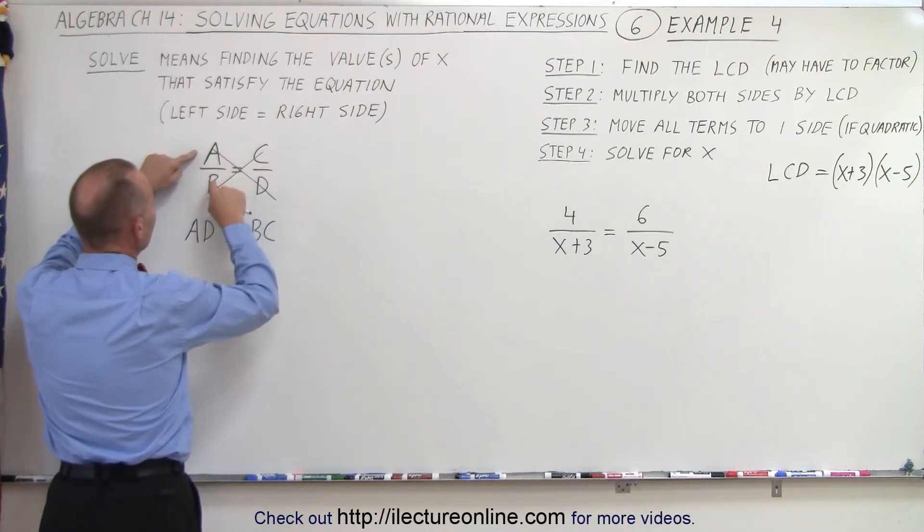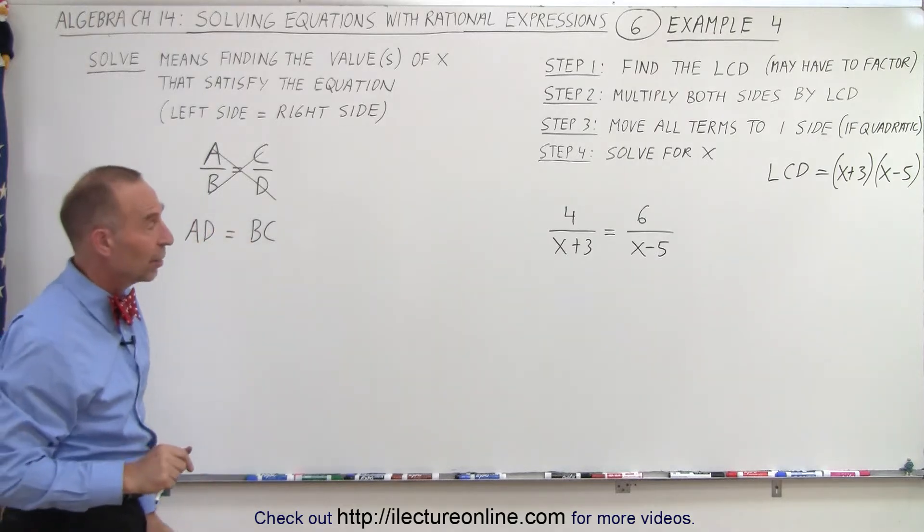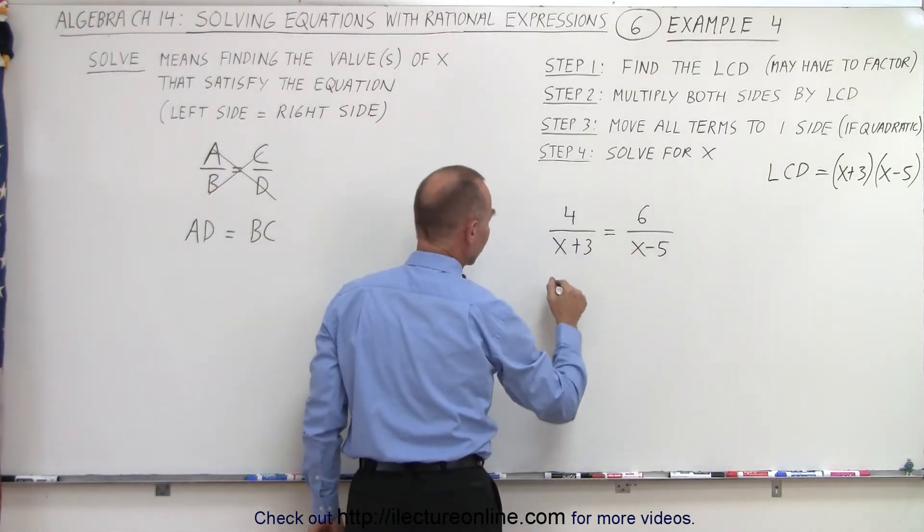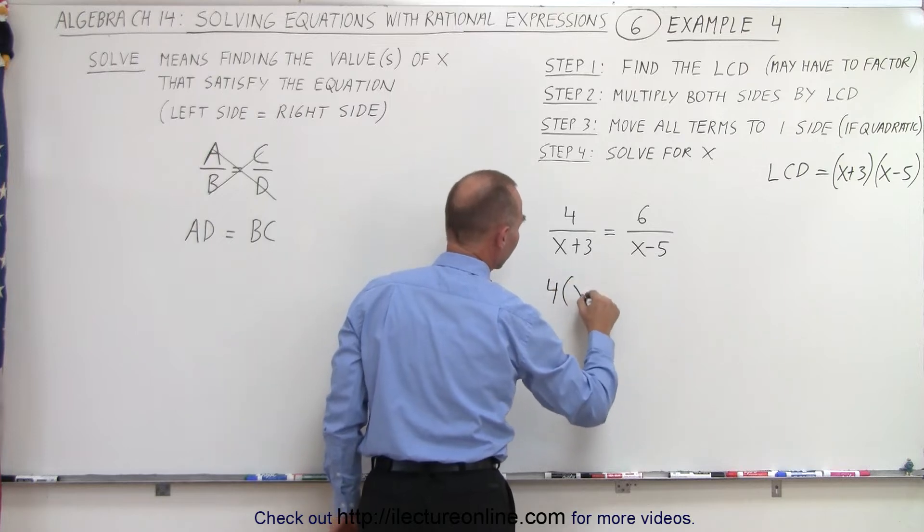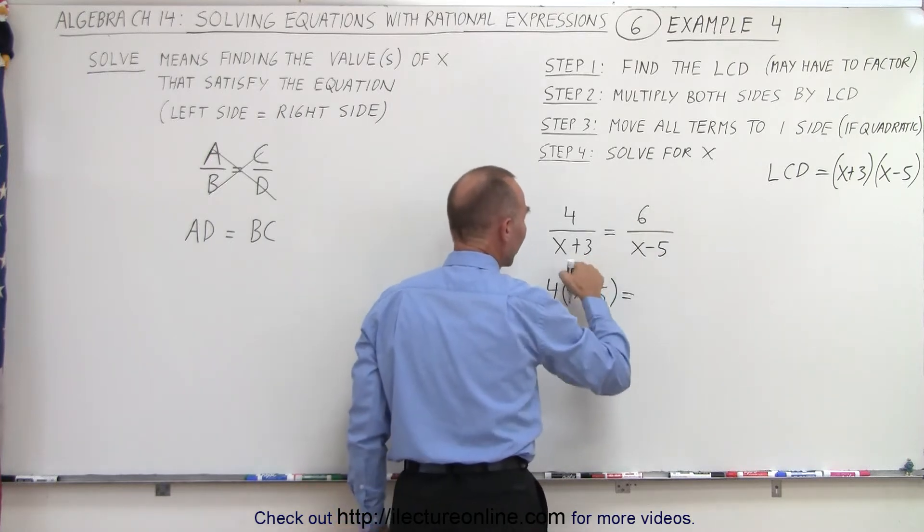So simply, a times d, b times c, and set equal to each other. So we can use the same technique over here. We can move the (x-5) over here, and write this as 4 times (x-5) is equal to 6 times (x+3).